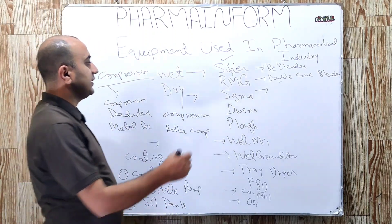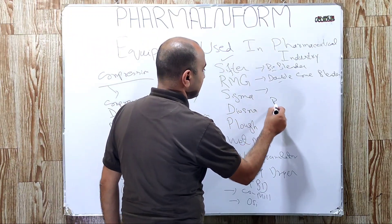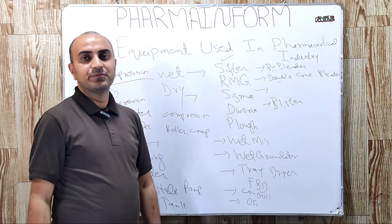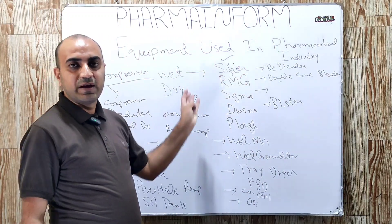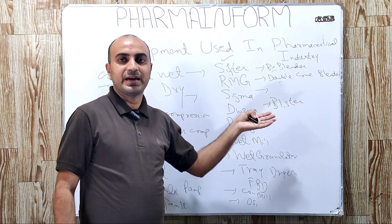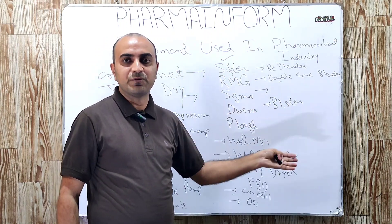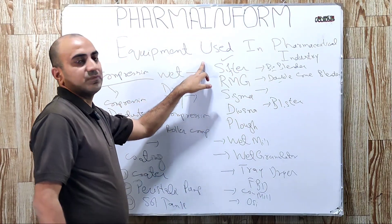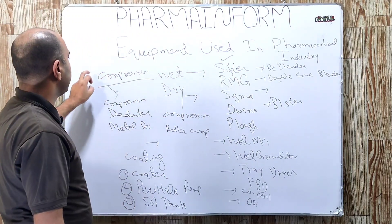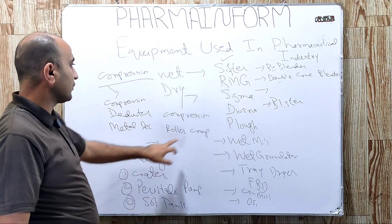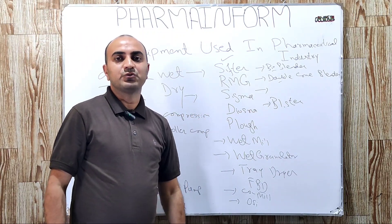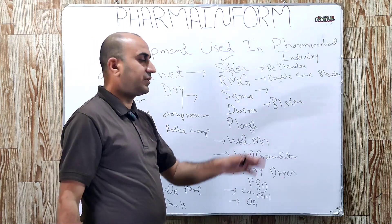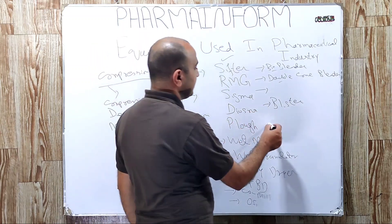After coating, we have blistering. For blistering, we use blister machines. Blister machines can pack our tablets into strips such as alu-alu blisters or alu-PVC blisters. So the steps are: first granulation, second compression, third coating, and fourth blistering. If you want to learn all about blister machines, the link to the article is given in the description.